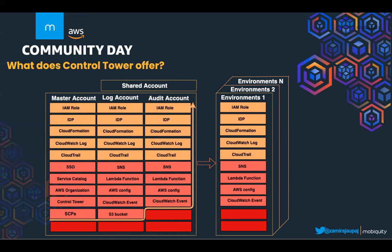The log account works as a repository for API activity and resource configuration from all accounts and regions that are part of the landing zone. The audit account is a very restricted account designed to give your security and compliance teams read and write access to all accounts in your landing zone. In each account there are resources created. Starting from the master account, there are services applied in all accounts — such as IAM roles, identity provider, CloudFormation, CloudWatch logs, and CloudTrail.